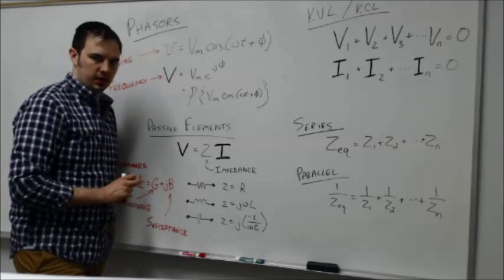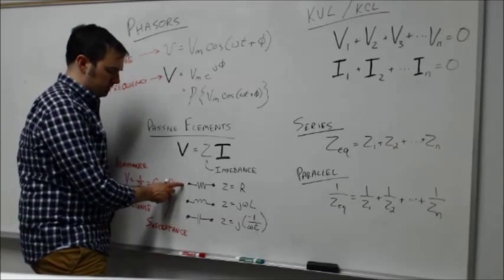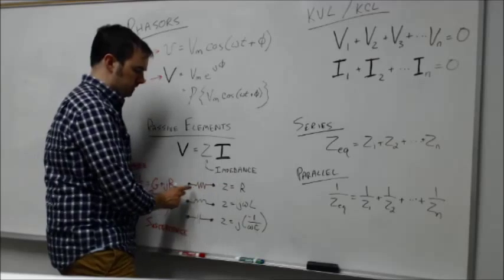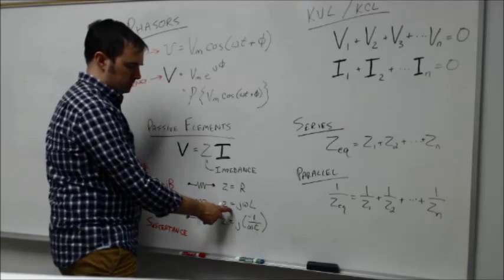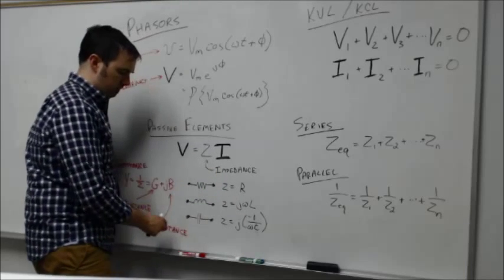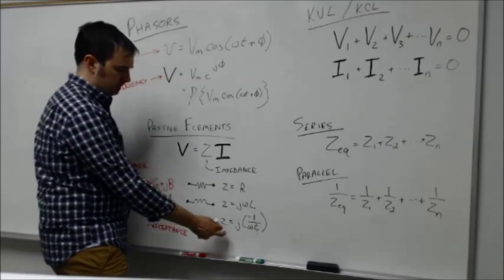The impedance of a resistor simply is resistance R. The impedance of an inductor is, as we worked through in class, J omega L. The impedance of a capacitor is J times negative 1 over omega C.